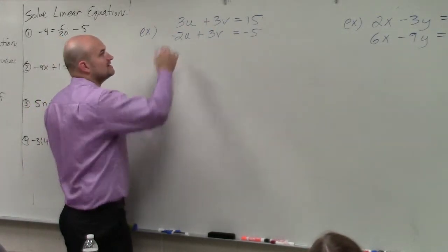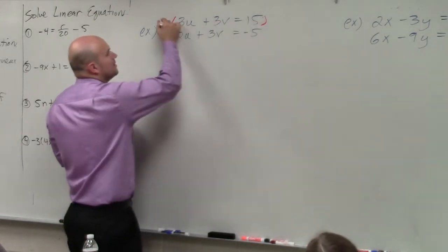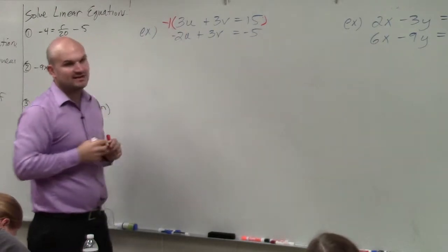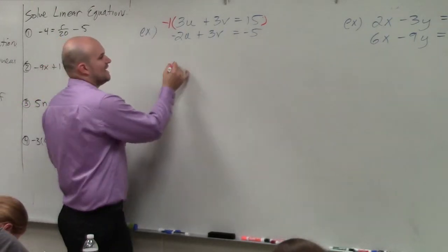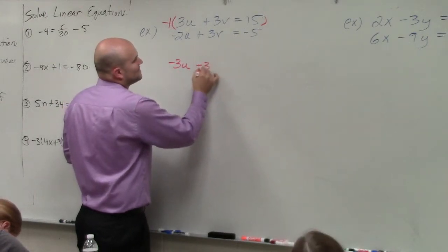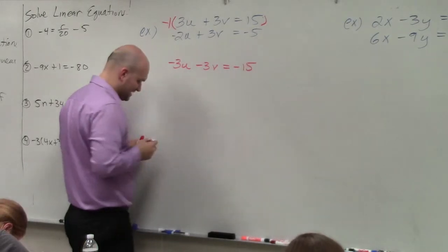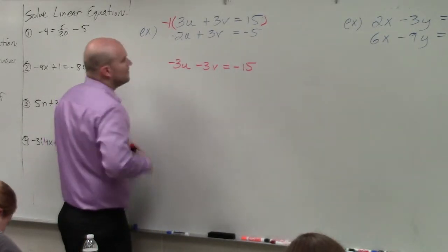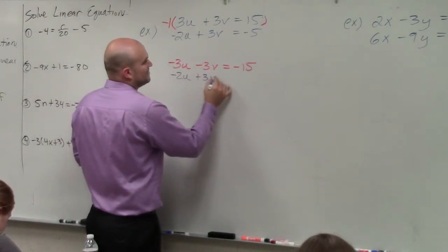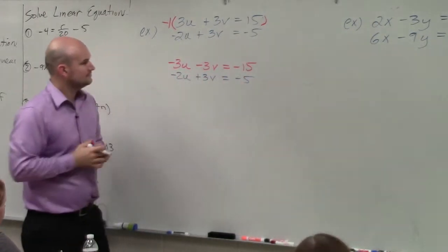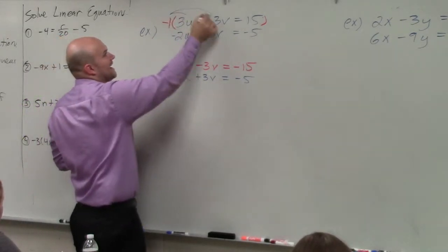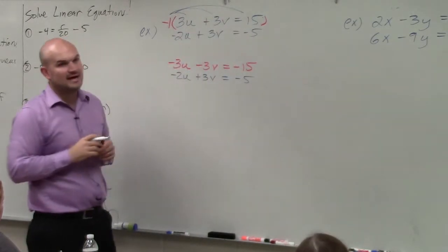So what I'm going to do is I am going to multiply one of the equations by a multiplier. That multiplier, in this case, is a negative 1. When doing that, I now obtain the equation negative 3u minus 3v equals negative 15. Then I'll rewrite my second equation again: negative 2u plus 3v equals negative 5. Does everybody see what I did? Make sure when you multiply, you multiply every single term by that multiplier.